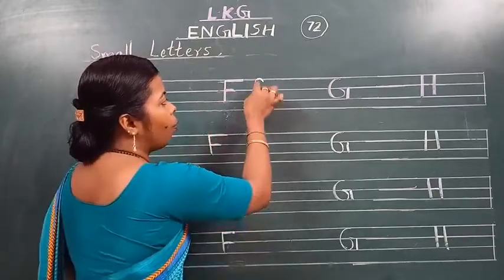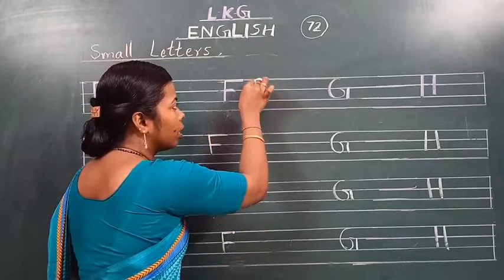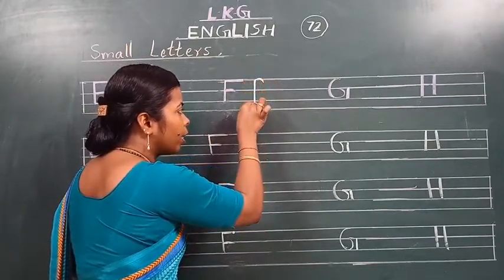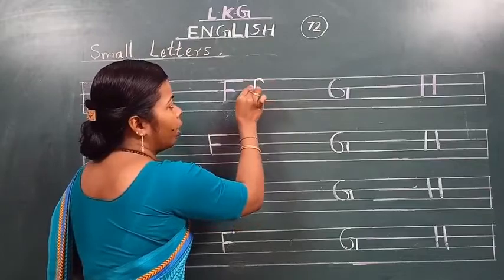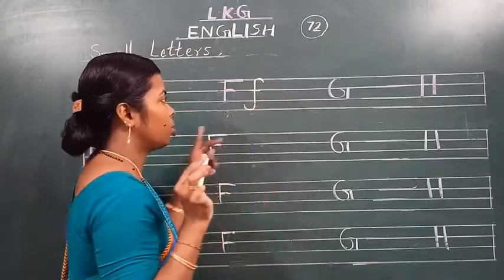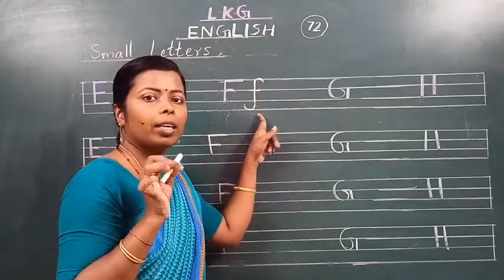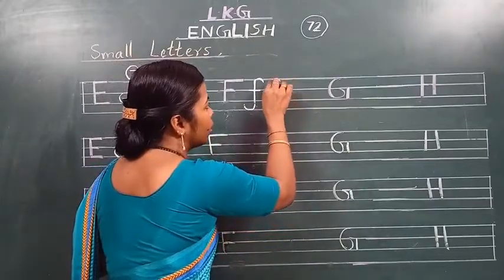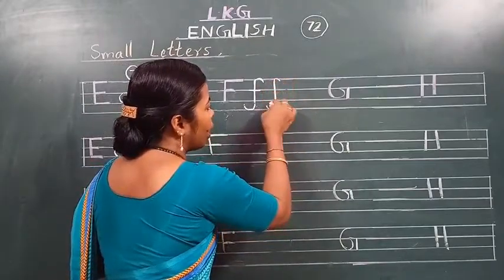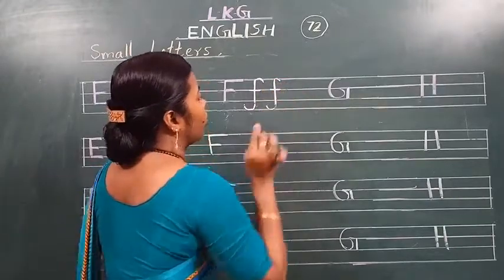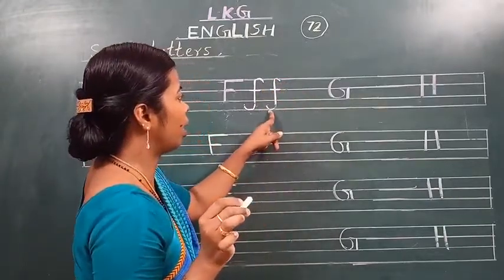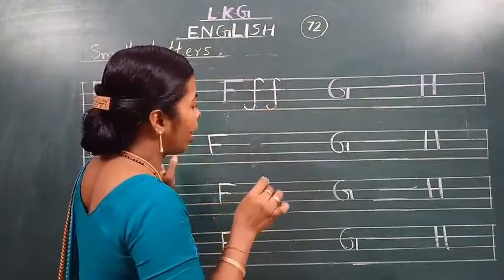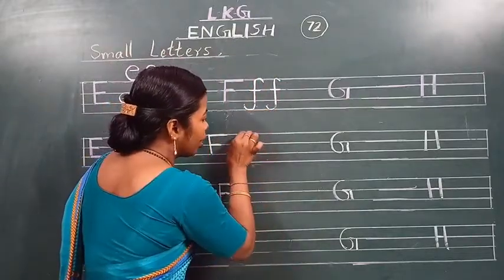Okay, aagaya samajh. Oopar se shuru karna — standing line banana. Dekho, phir idhar curve. Or idhar aapko sleeping line kheenchni hai. Ban gaya? Ek baar aur bana lijiye. Oopar se shuru karna — dekho, last mein aapko end karna hai. Charo lines mein milake likhna hai F. Okay, idhar bhi likh dijiye.